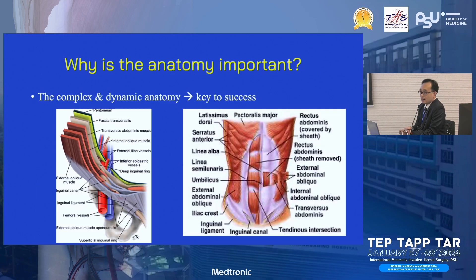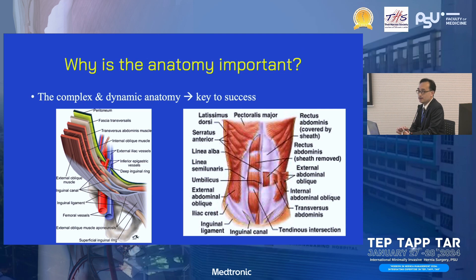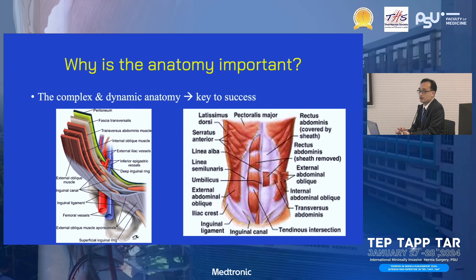First, anatomy. Anatomy is the father of the abdominal wall. The inguinal region is a complex muscular and dynamic structure — when you are standing, walking, running, every activity uses your abdominal muscles. If you know that, it is the key to success for hernia repair. I won't go too deep into this topic due to time limitations.